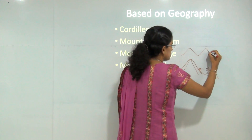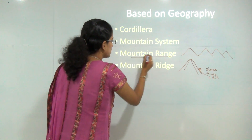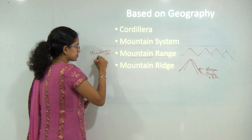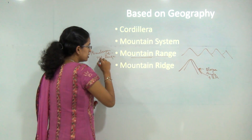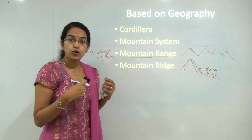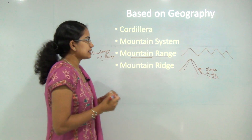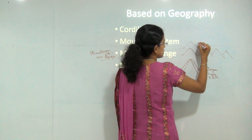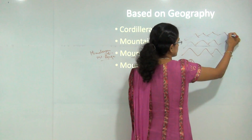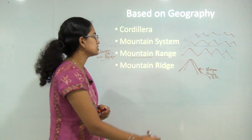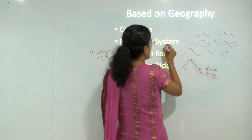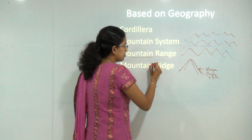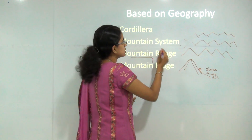A series of mountain ridges forms a mountain range. The classic example is the Himalayan mountain range. A mountain system includes a series of ranges — one range, another range, and a third range that is either parallel or perpendicular. In simple terms: a ridge is a single mountain, a group of ridges forms a range, and a group of ranges forms a system.